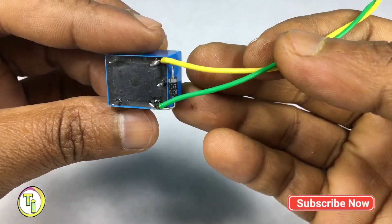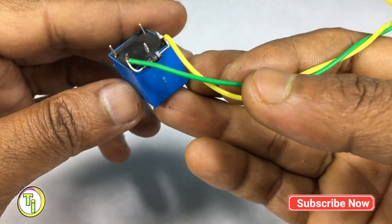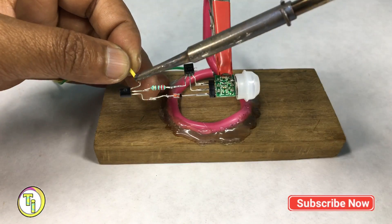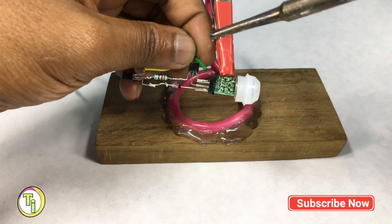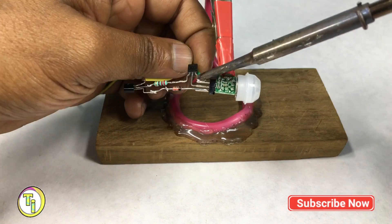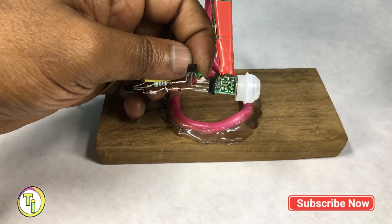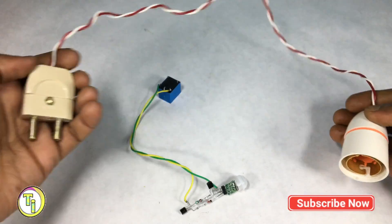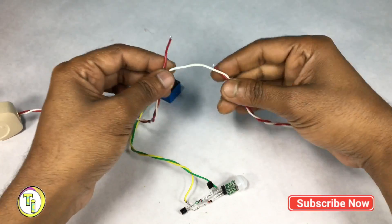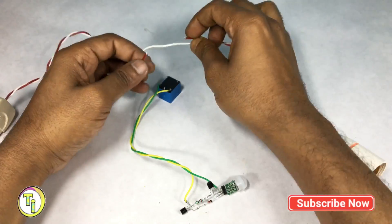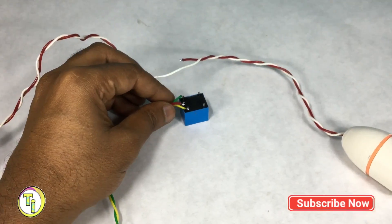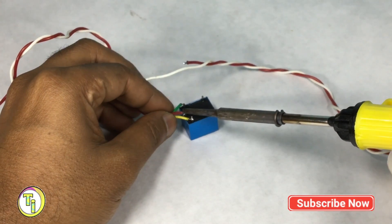Here is the relay with protection diode connected, one wire to PNP collector and another to ground. Now connect the AC wire, one to the common pin of the relay and another to the normally open pin.